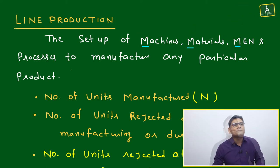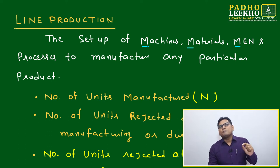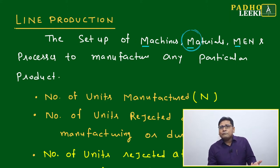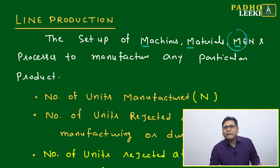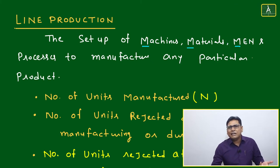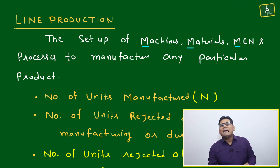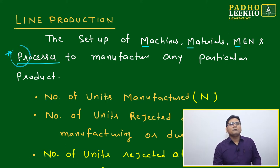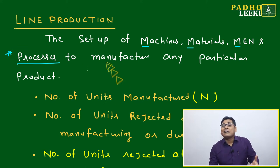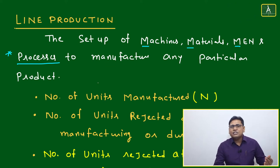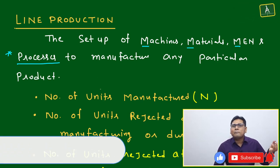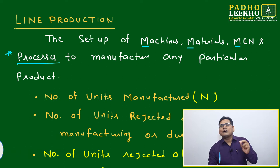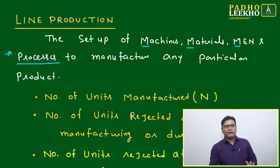To manufacture any particular product, these four resources are needed: Machine (based on the process requirement), Material (which may be raw material or finished product), Man (skilled labor, unskilled labor, supervisor, engineer, manager — every person from top to bottom in the factory setup), and Processes. Processes are the most important because they define which machines, materials, and skill levels are required.